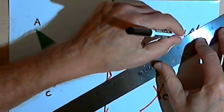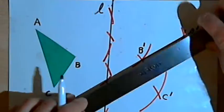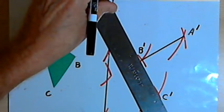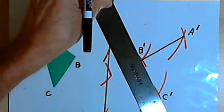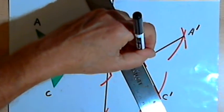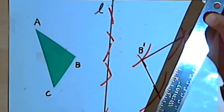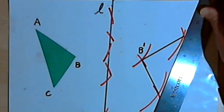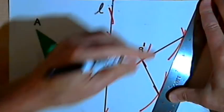So there's line segment A prime, B prime. Here's B prime, C prime. And this is A prime, C prime.